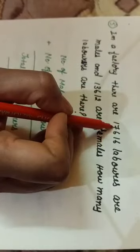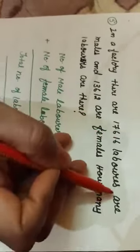For example number 2, I am going to solve question number 5 from your book. In a factory, there are 17616 laborers and are male and 13612 are females. How many laborers are there?